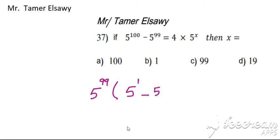5 power of 0 equals 4 multiply 5 power of x. 5 power of 1 is 5, minus 5 power of 0 is 1, equals 4 multiply 5 power of x.